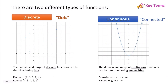There are two different types of functions. We have discrete functions, which kind of look like dots, because discrete functions only include specific values, so the graph will look like dots on the coordinate plane. That's why when you describe the domain and range of a discrete function, you're going to use lists — you just list out all the values that are included.